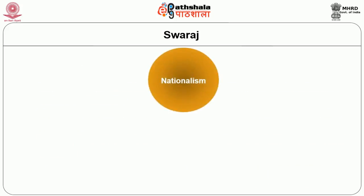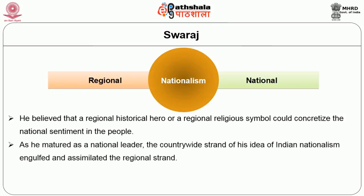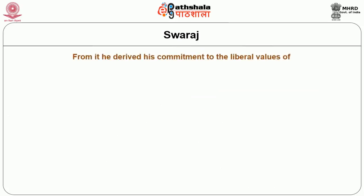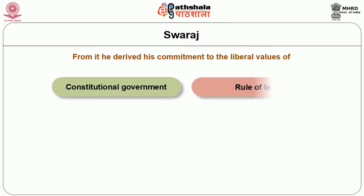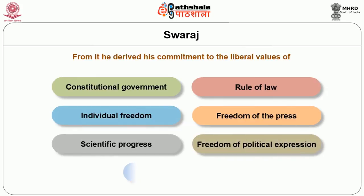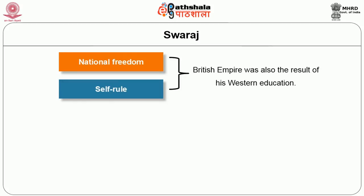Tilak thought of nationalism as operating at two levels: the regional and the national. He believed that a regional historical hero or a regional religious symbol could concretize the national sentiment in the people. As he matured as a national leader, the country-wide strand of his idea of Indian nationalism engulfed and assimilated the regional strand. Although he remained a devout Hindu and gave priority to the political self-rule movement over social reform movement, the impact of western education on him was impressive. From it, he derived his commitment to the liberal values of constitutional government, rule of law, individual freedom, freedom of the press, political expression and organization.